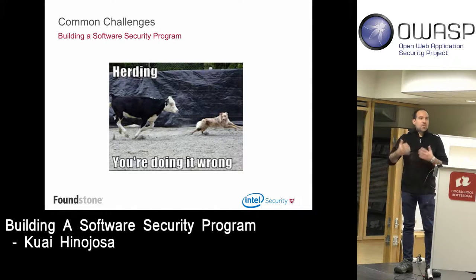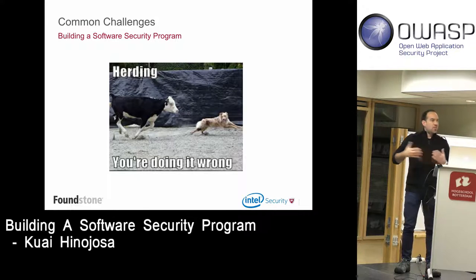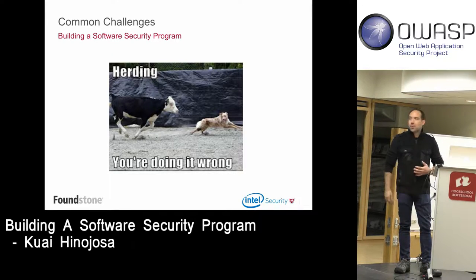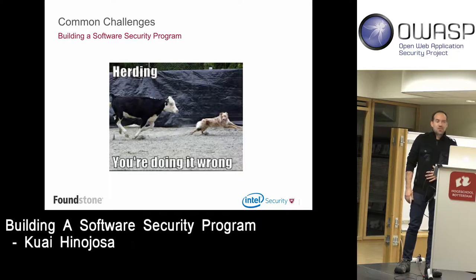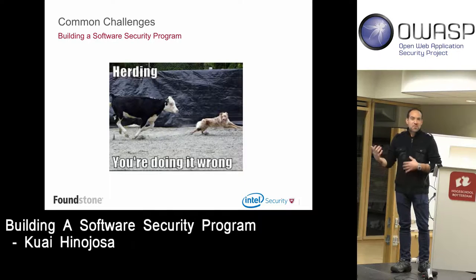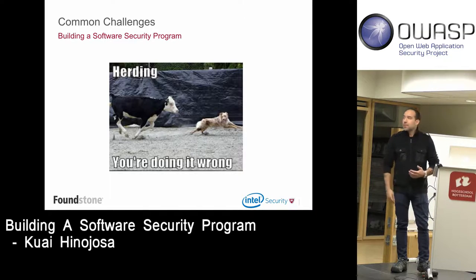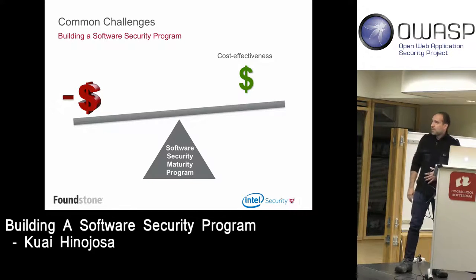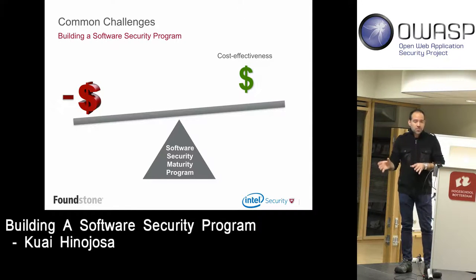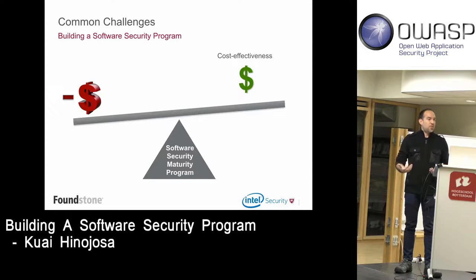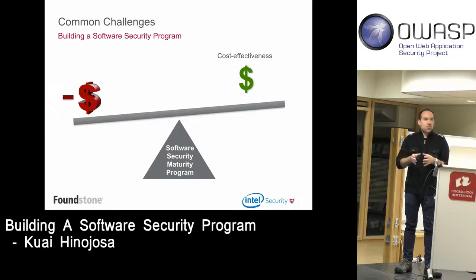One of the most common challenges I hear from people trying to build a program — like banks, for example — is that sometimes they feel like they're herding cattle. If you feel that way, it's because you're probably not doing the right thing; you don't have the right strategy. Software security is really a very complex problem. It's not just about tools — it's a people, process, and technology issue. It takes a well-coordinated effort to get all the activities orchestrated to ensure you're actually making progress.